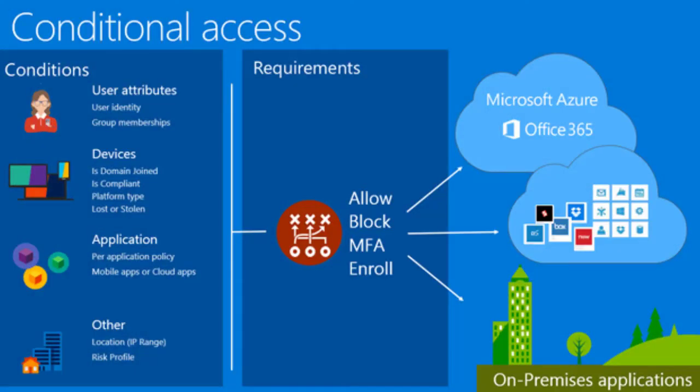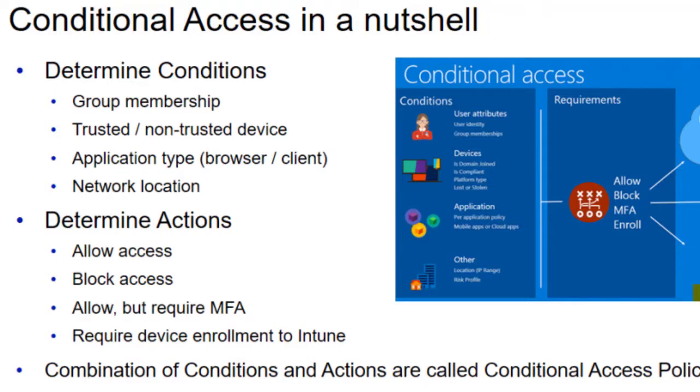Conditional access is another piece that helps protect within Azure Active Directory, where based on certain types of conditions and parameters, it might trigger additional verification through multi-factor authentication, or might block access if it's a risky user or if it's been identified as a potential anonymous IP address. Those are all things used to protect us against these kinds of identity-based attacks.